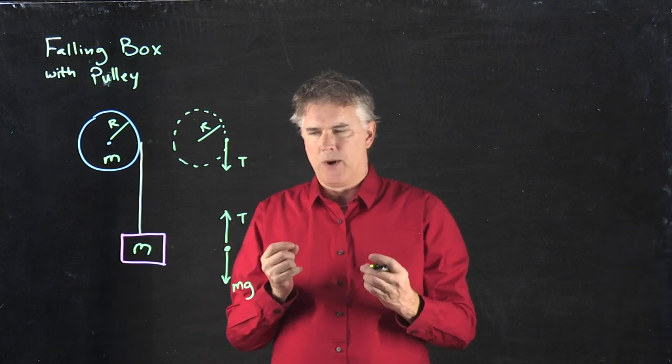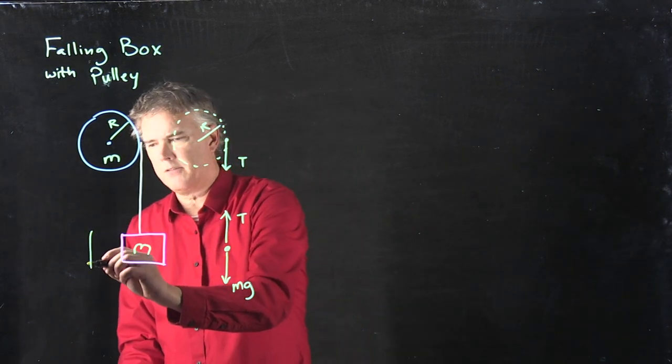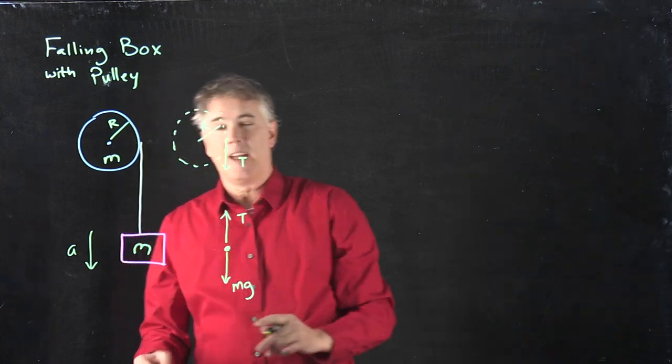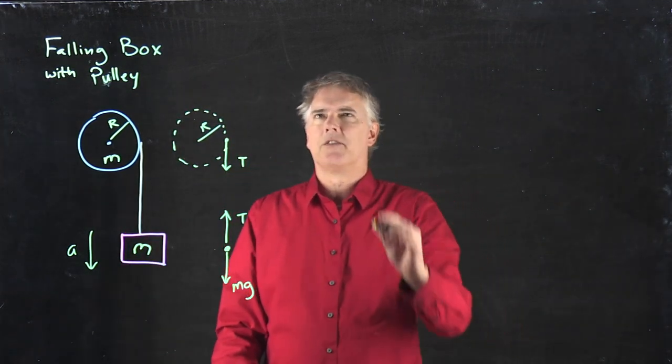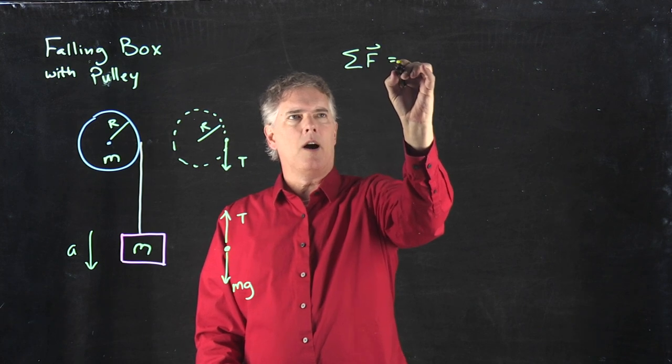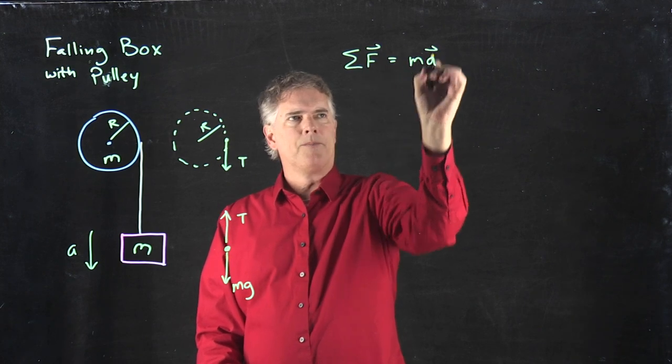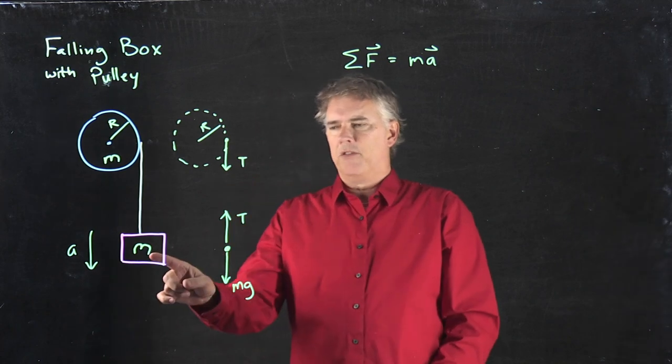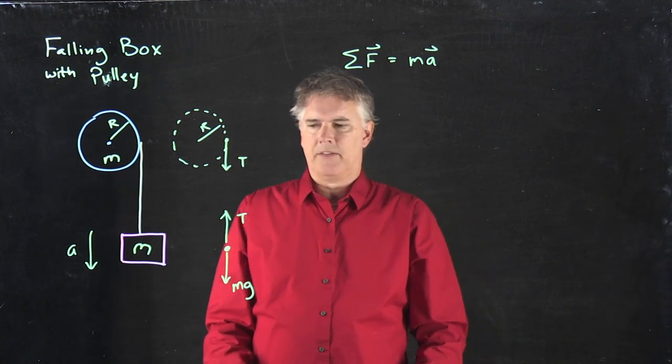First off, we've got to pick a direction here. We're going to say that the positive direction is down because we know that's the way the box is going to accelerate. If I think about Newton's second law for the box, the sum of the forces on the box has to equal the mass times the acceleration.